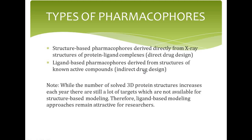In the ligand-based Pharmacophore modeling approach, novel ligands are designed by using a set of active ligands available. This approach is employed if the target structure is not available. First, active ligands are identified using the literature or database search. The dataset is split into training set and test set. Then, feature analysis of the training set ligands is done. Common features are detected through alignment of the active ligands. The next steps are Pharmacophore model generation, ranking of the generated models, and finally Pharmacophore model validation, after which the best model is selected.